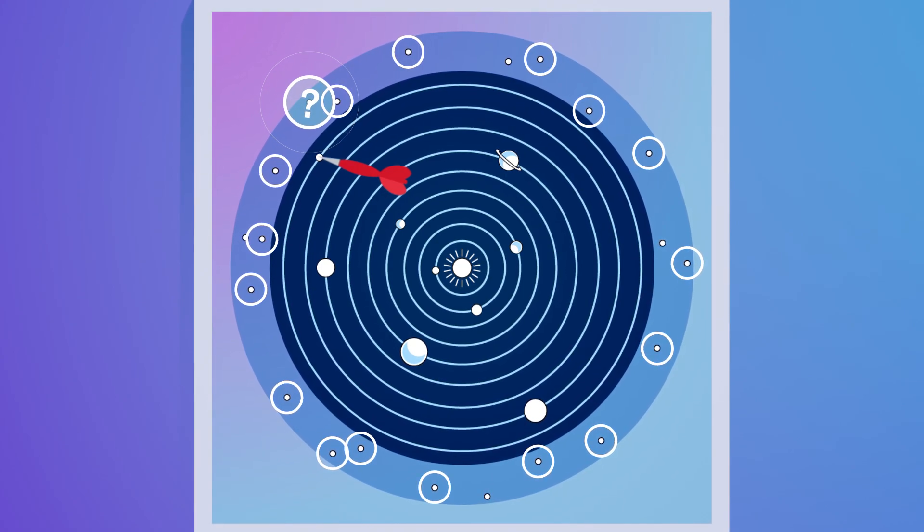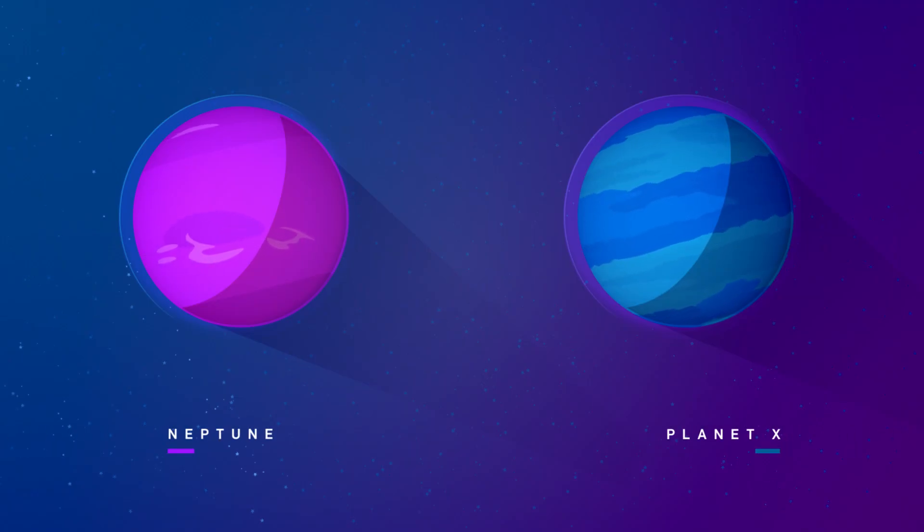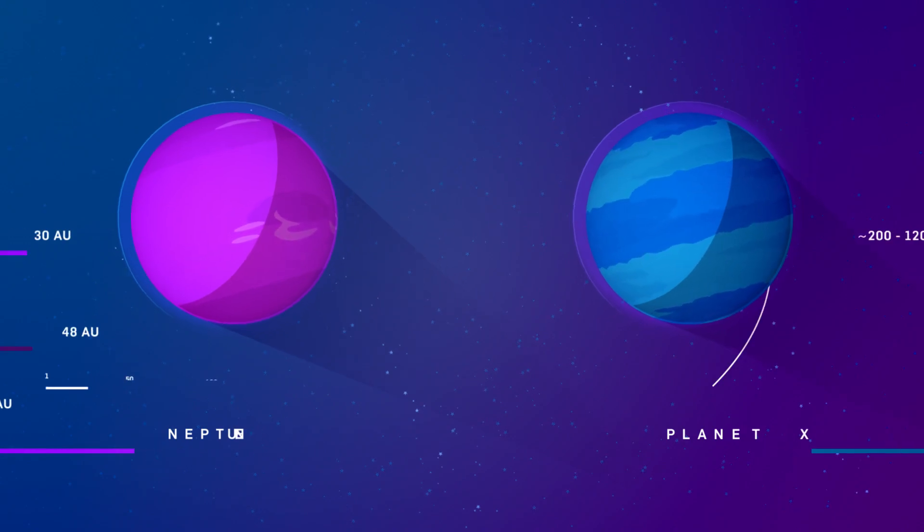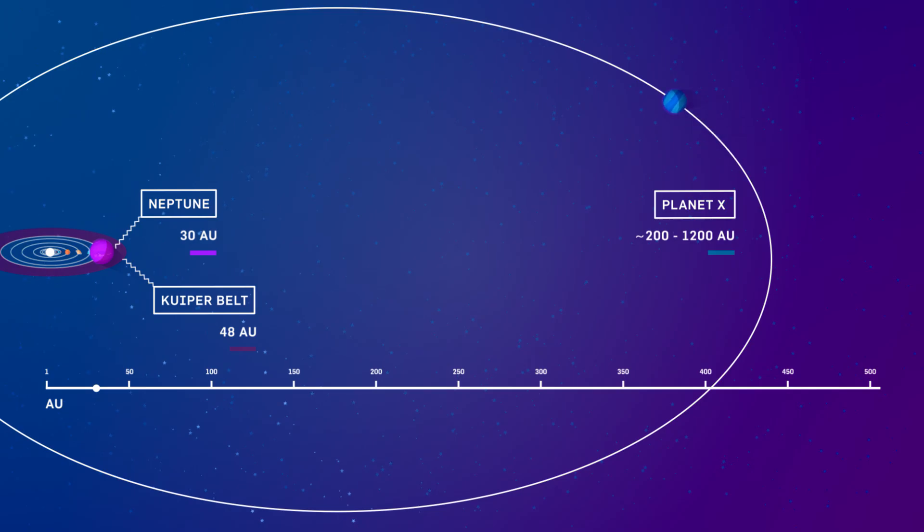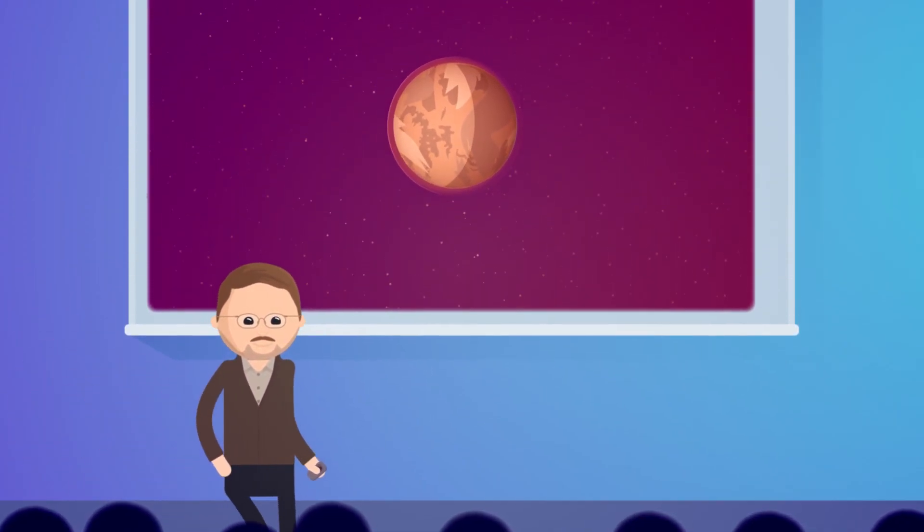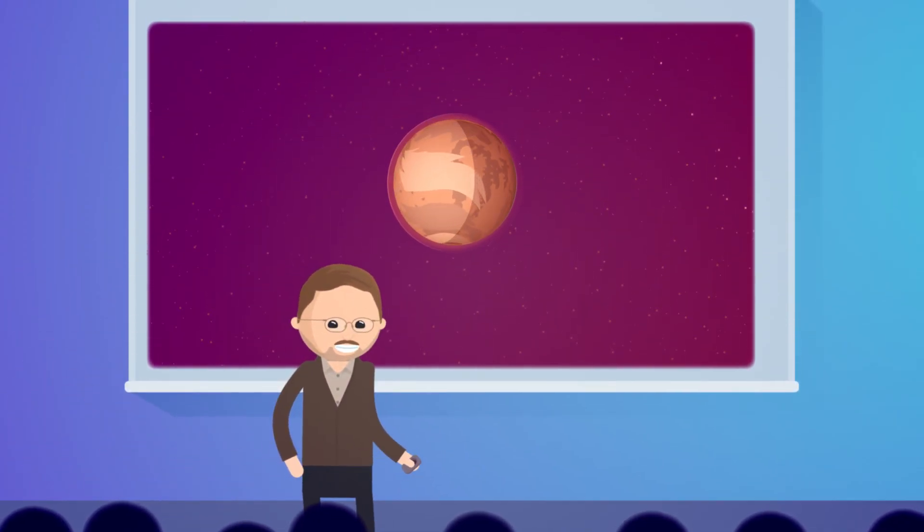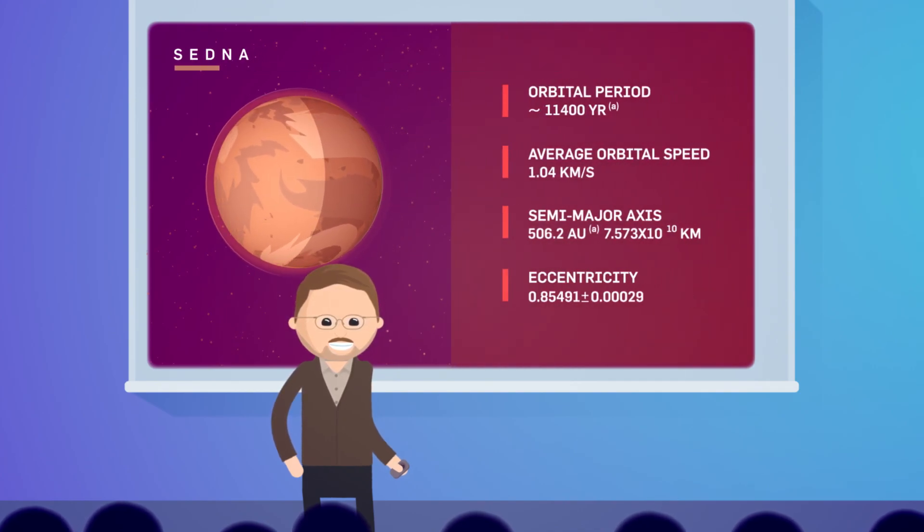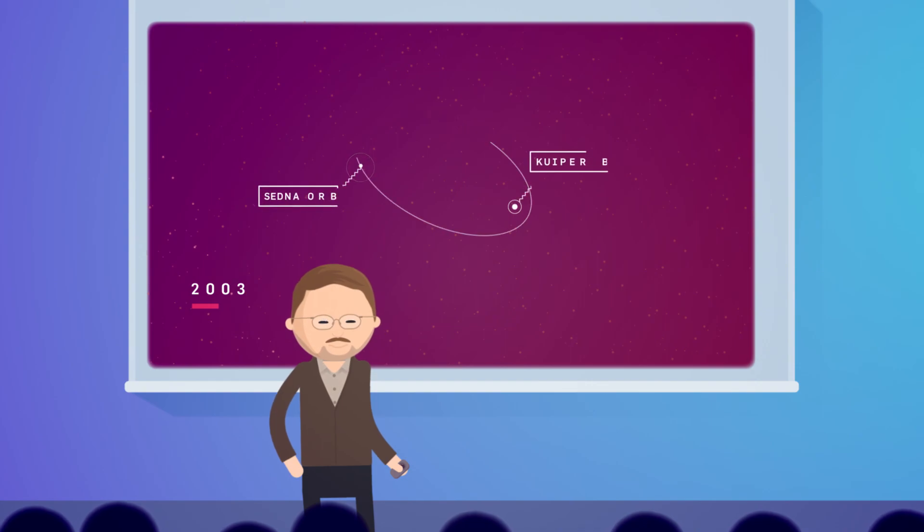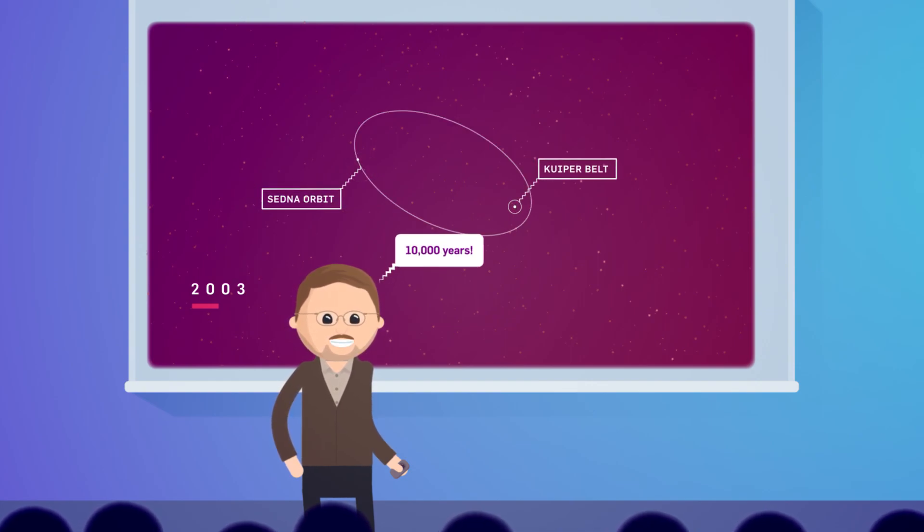Brown now has a pretty strong case that a planet the size of Neptune is orbiting the Sun 10 to 20 times farther away than Pluto. In 2003, Brown and his team discovered a dwarf planet called Sedna, the farthest object ever seen in our solar system. It possesses an extremely elliptical orbit that takes 10,000 years to make one trip around the Sun.